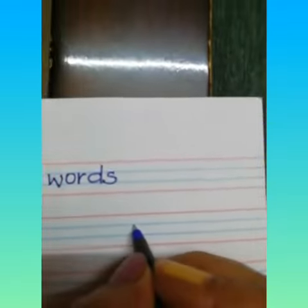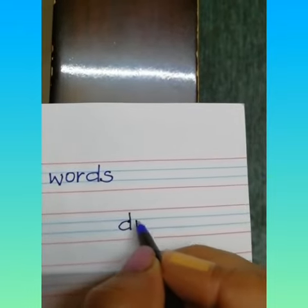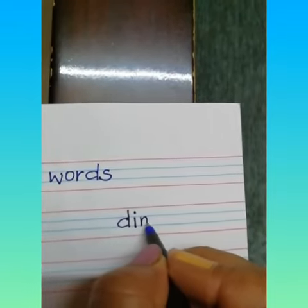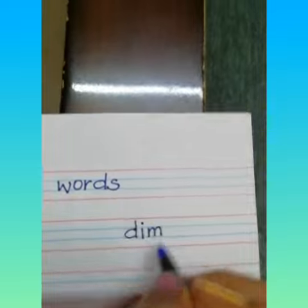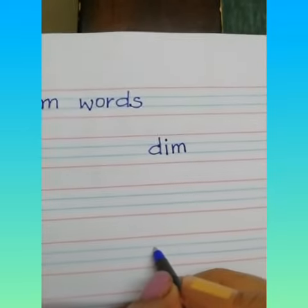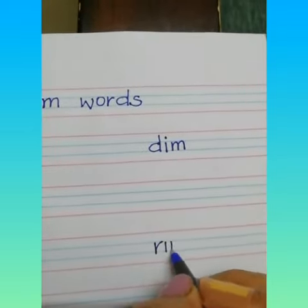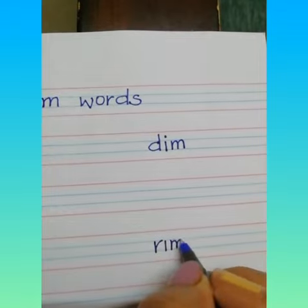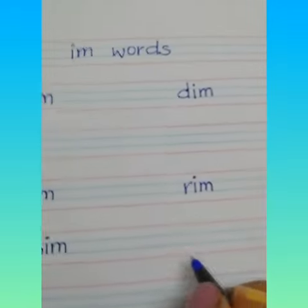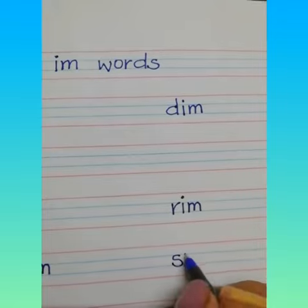Once again we repeat: D, I, M — DIM. Next we have R, I, M — RIM. After that we have S, I, M — SIM.